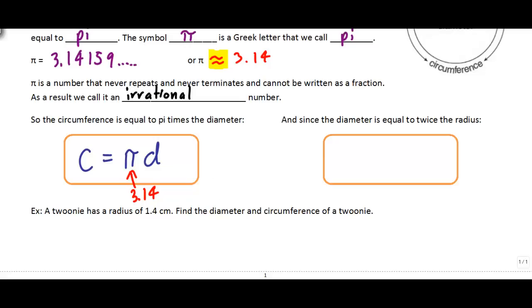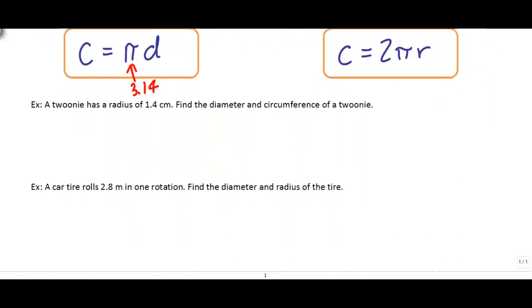Since we know that the diameter is equal to twice the radius, if this diameter here is just equal to twice the radius, then we can also write this formula as saying circumference is equal to 2 times pi times the radius. So we've got two ways to calculate the circumference. Okay, let's do a couple of examples.